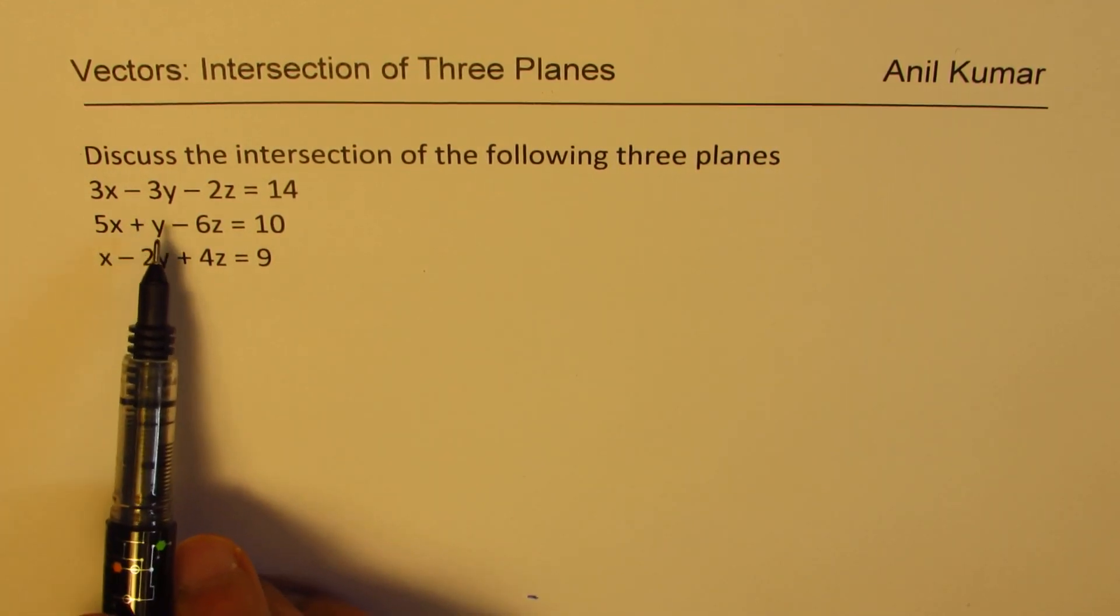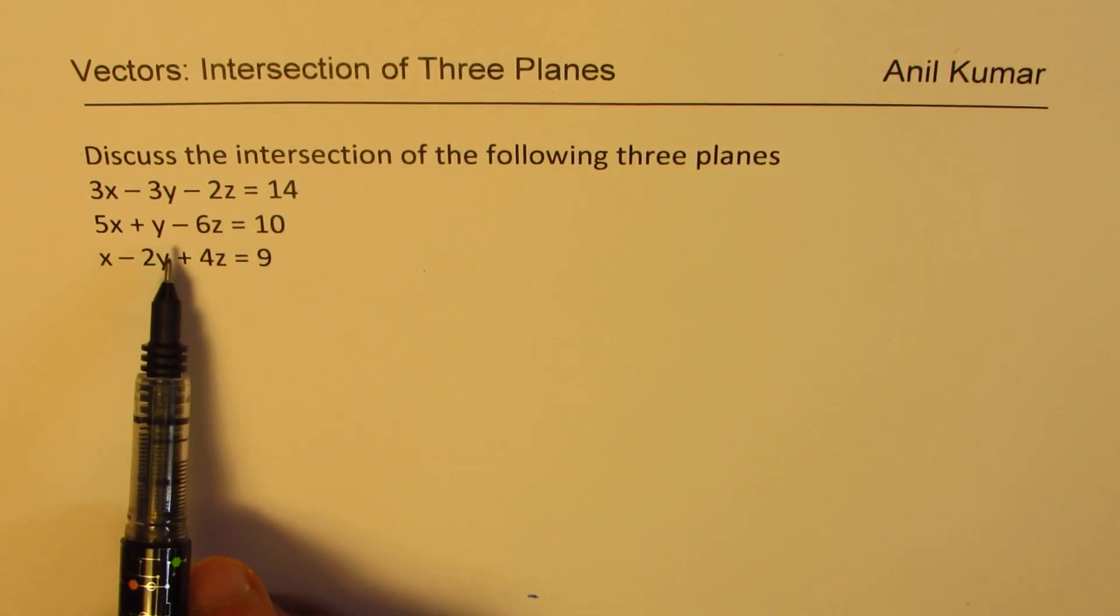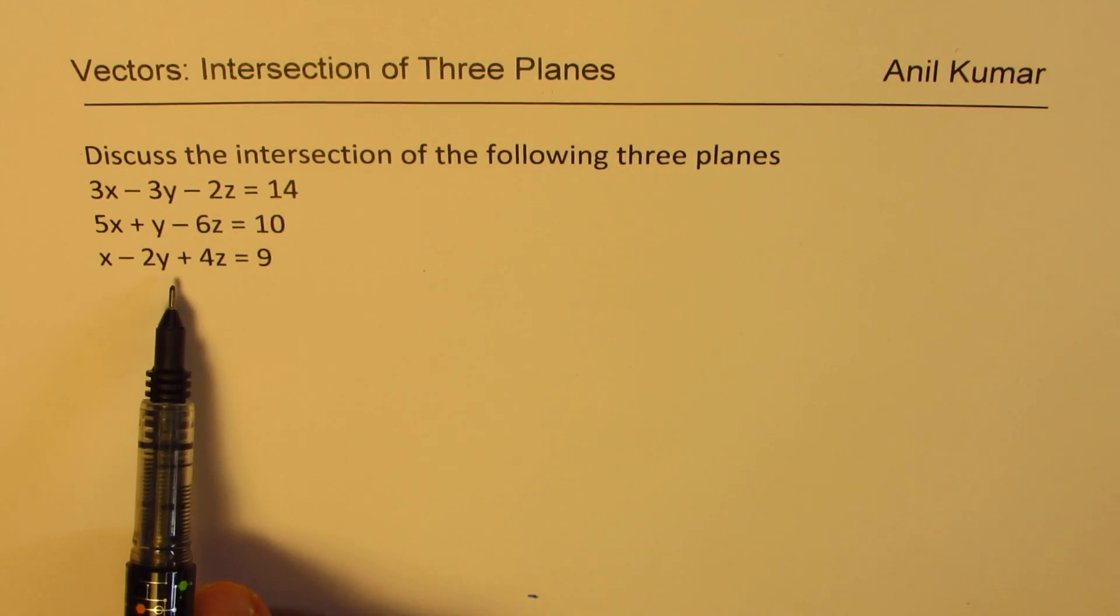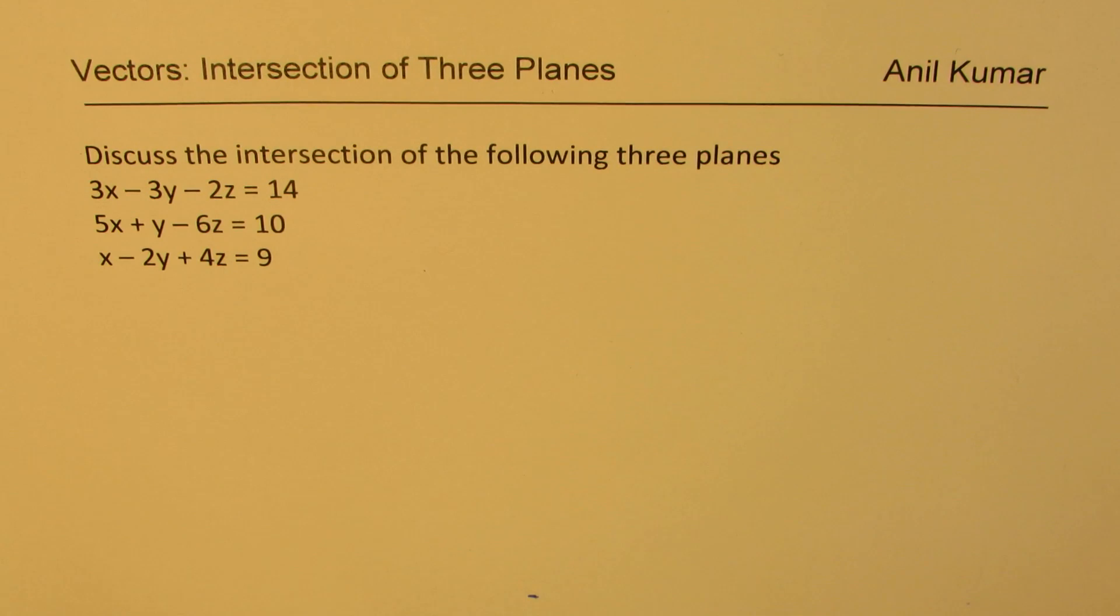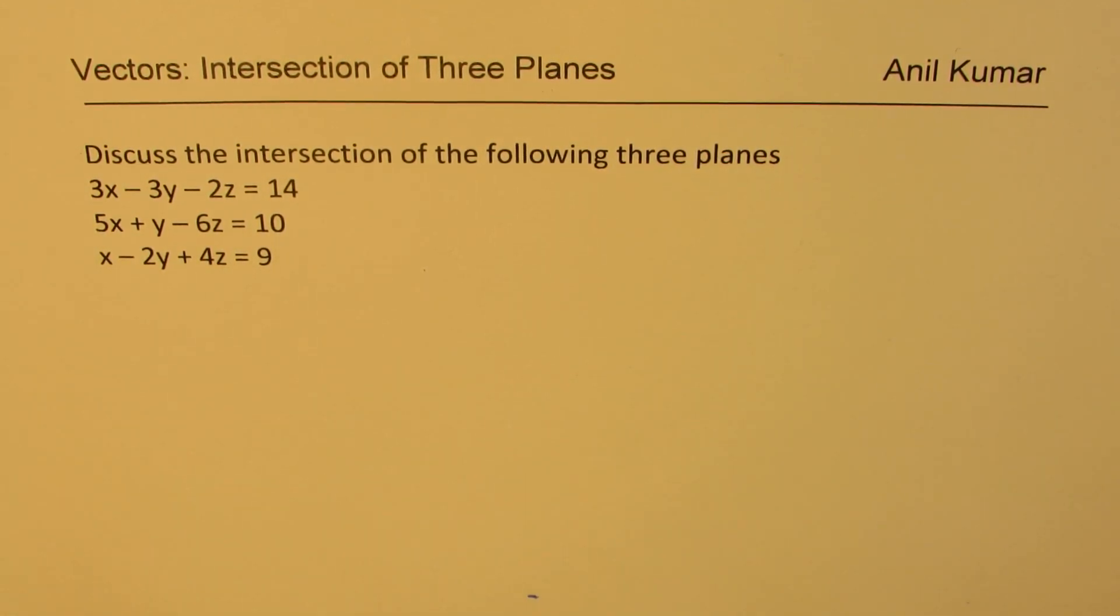Discuss the intersection of the following three planes: 3x minus 3y minus 2z equals 14, 5x plus y minus 6z equals 10, x minus 2y plus 4z equals 9. So we have three planes and we need to find the intersection of these planes.